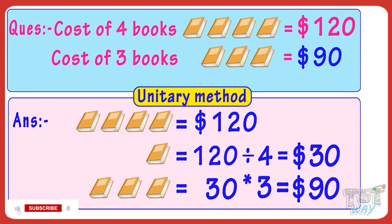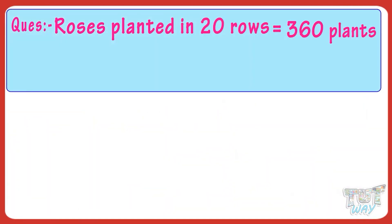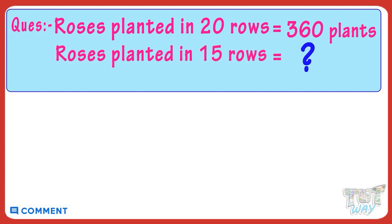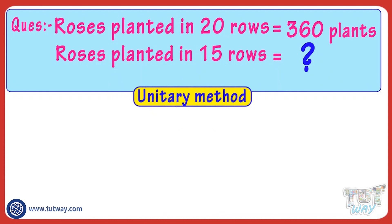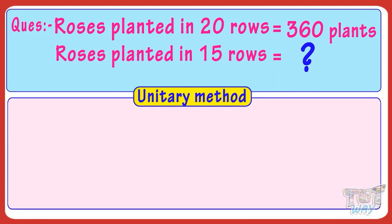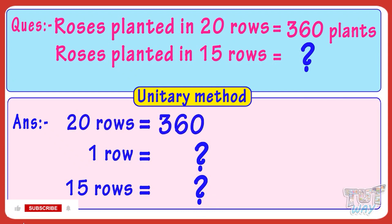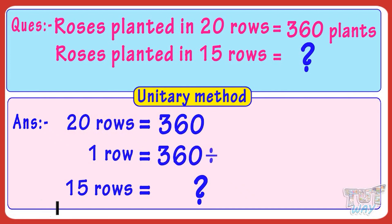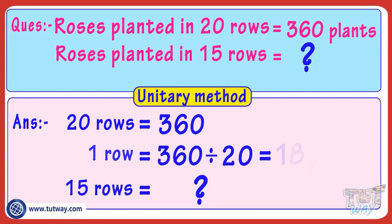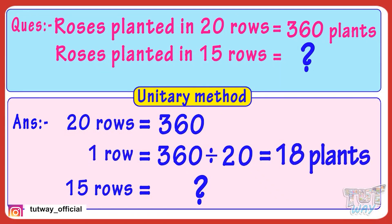Now let's take one more example. 360 rose plants can be planted in 20 rows. Then how many roses can be planted in 15 such rows? Let's find it out with the help of unitary method — first we will find how many rose plants can be planted in one row. In 20 rows, 360 plants can be planted, so the number of plants in one row is 360 divided by 20, which equals 18.